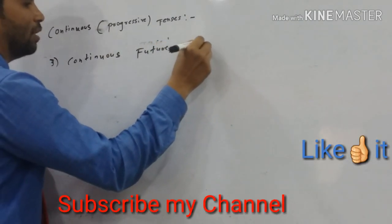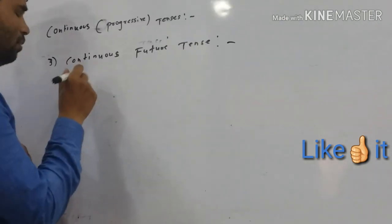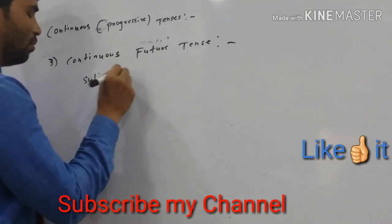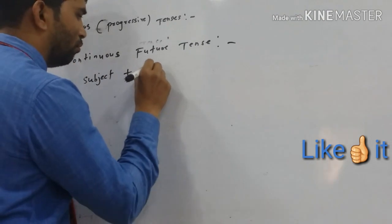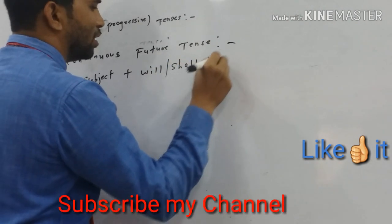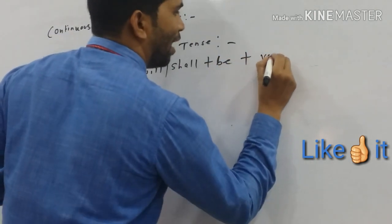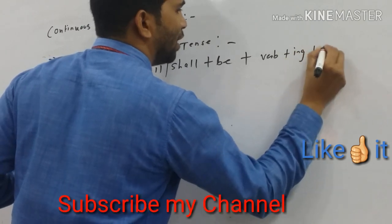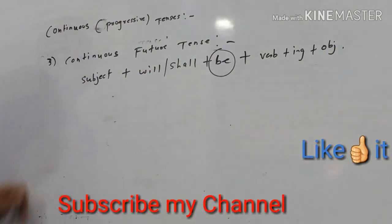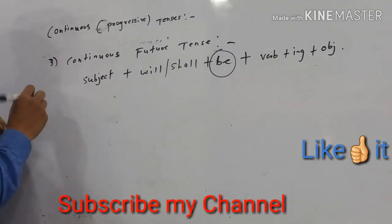Future Tense. We have to remember one formula: Subject plus will or shall plus be plus verb plus ing plus object. In this, 'be' is compulsory.